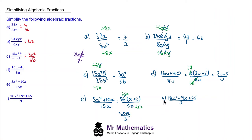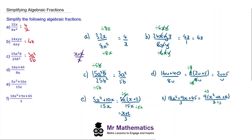For question f, we again factorize the numerator. The highest common factor of the numerator and denominator is 3. 9 divided by 3 makes 3, and the 3 in the denominator cancels to make 1. So we have 3 lots of (x squared + x + 6). We could expand the brackets if we wanted to, but I'm going to leave it in brackets.